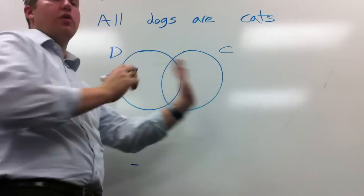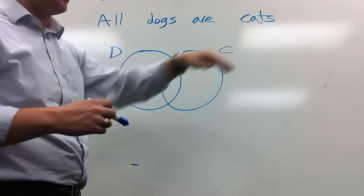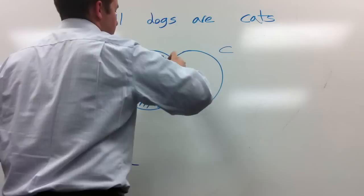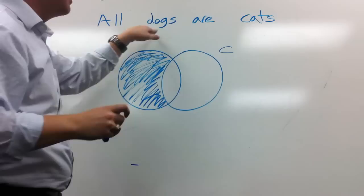all dogs are cats, so you have to be in the cat circle. Because if you're a dog, then you're a cat. All dogs are cats. So we block out every part of the dog circle that's not in the cat circle. So we block this all out. So now the only part of the dog circle that's left is where the cats are too, because all dogs are cats.